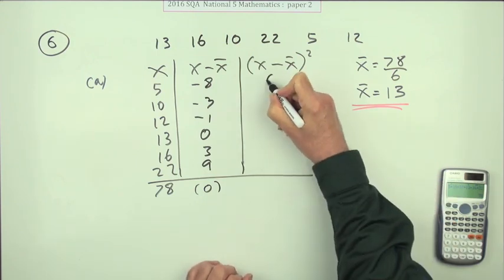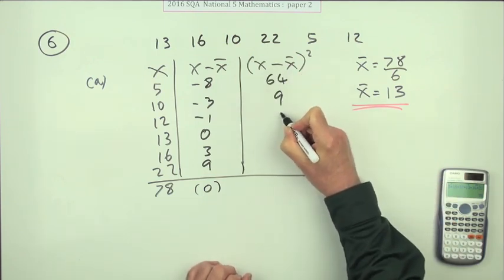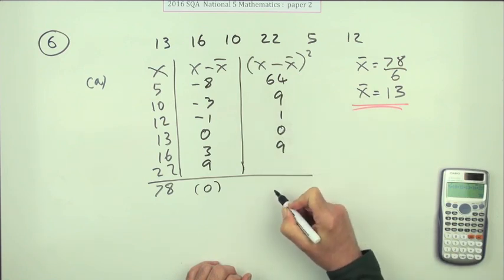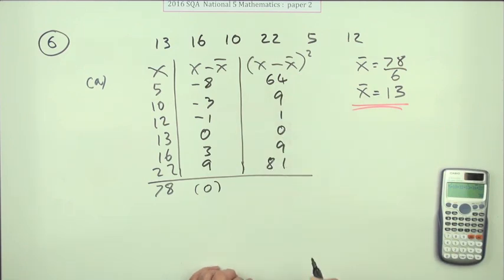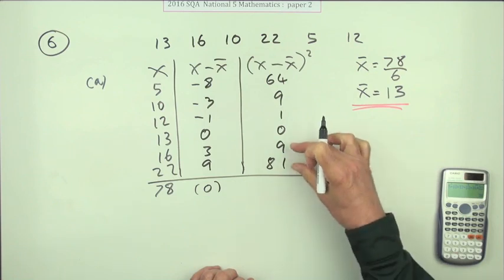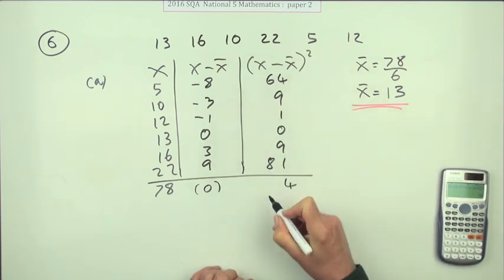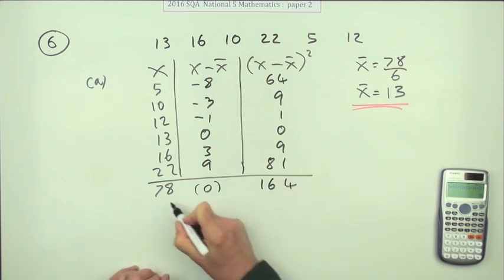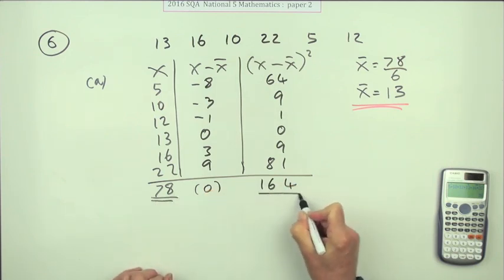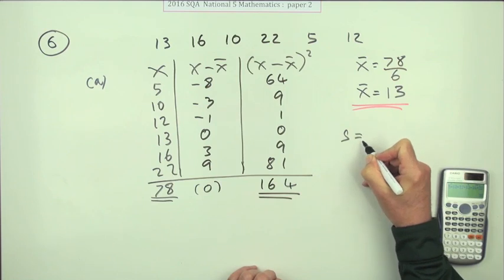Squaring them, you can do without your calculator: 64, 9, 1, 0, 9, and 81. You could probably add them up without the calculator. That comes to 164. There's the two totals we needed: that for the mean and this for the standard deviation.